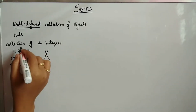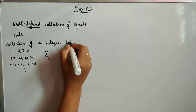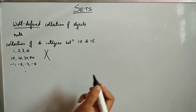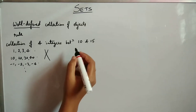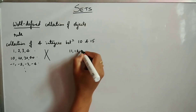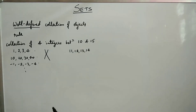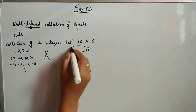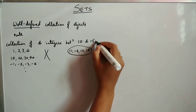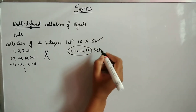Instead, if I say collection of 4 integers between 10 and 15, the only possible collection is 11, 12, 13, 14. This is the only possible collection, so this is a well-defined collection and we can call this collection a set.